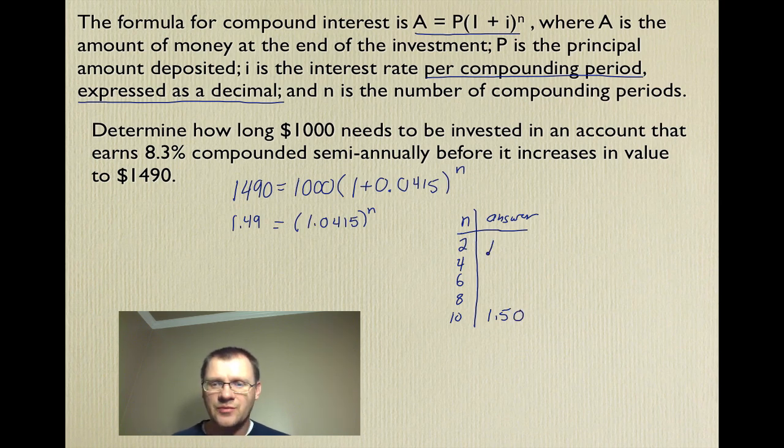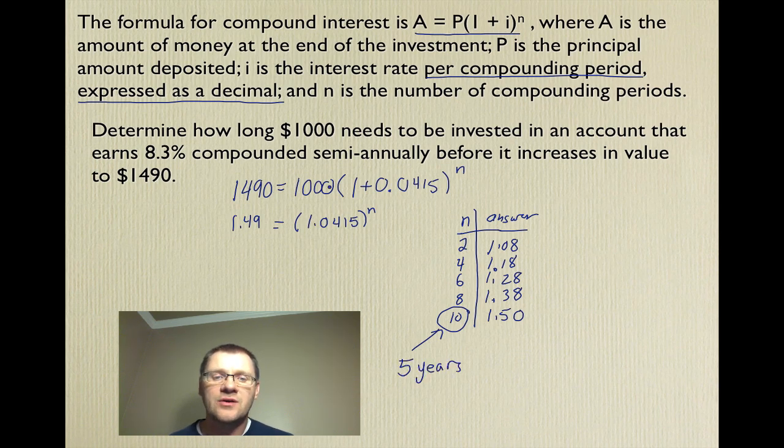My answer for 2 was 1.08. 1.18 when I plugged in a 4. When I plugged in a 6 it was 1.28. And when I plugged in an 8 it was 1.38. When I plugged in a 10 I got to 1.50, which is really close to 1.49. So this 10 is how many compounding periods there are. Now since it's being compounded semi-annually, that means that there's 10 compounding periods. It took 5 years for your money to go from $1,000 to $1,490.